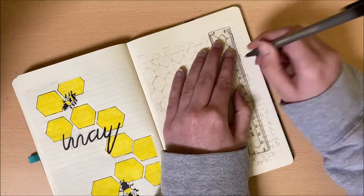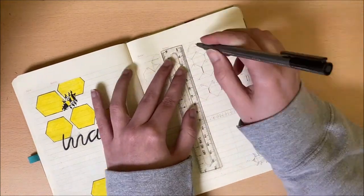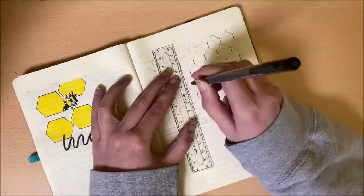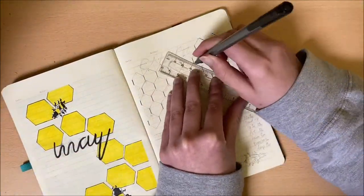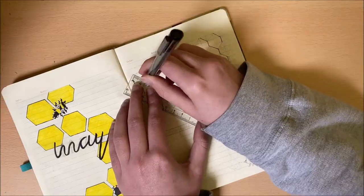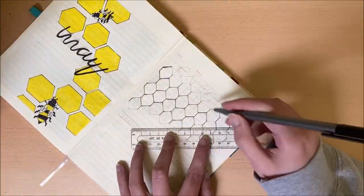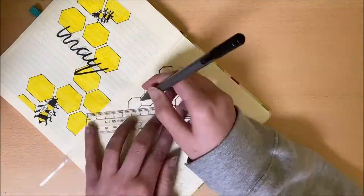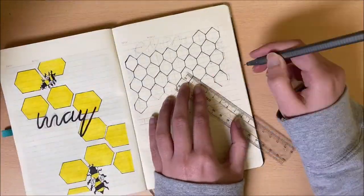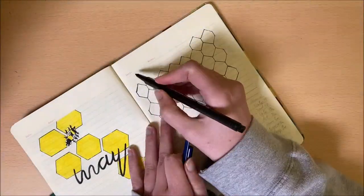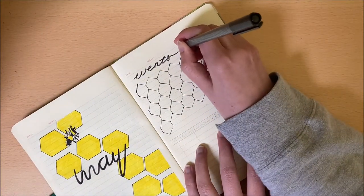After that I decided to add a honeycomb type of layout for my events page. I usually keep this to a certain amount of lines but I decided why not have fun with it. So this did take quite a long time to sketch out and even longer to go back over in black marker but the end result is really fun to look at.